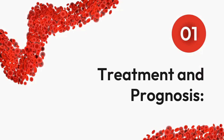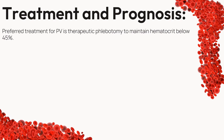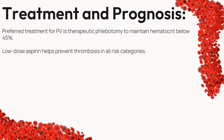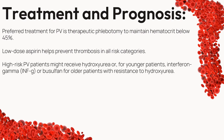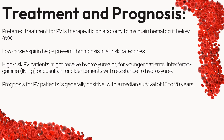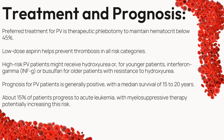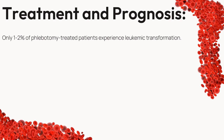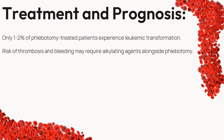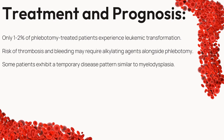Treatment and prognosis are pivotal points in PV's narrative. Therapeutic phlebotomy to manage hematocrit levels is the preferred approach, and low-dose aspirin steps in to prevent thrombosis across all risk categories. High-risk patients may receive hydroxyurea or other interventions tailored to their individual profiles. The outlook is generally positive, with a median survival of 15–20 years for most patients; however, about 15% of patients may face the possibility of progressing to acute leukemia, while only 1–2% of phlebotomy-treated patients experience leukemic transformation.